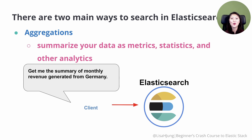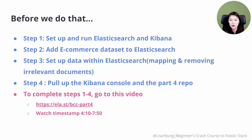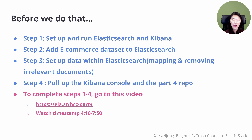The best way to show you how these aggregations work is by running these requests with Elasticsearch in Kibana. To do that, we'll be working with an e-commerce dataset and running aggregation requests on it, which will help us gain insights about our data. We need to complete four steps: first, set up and run Elasticsearch and Kibana; then add the e-commerce dataset to Elasticsearch; afterwards, set up the data; and lastly, pull up the Kibana console in one window and the part four repo in another. I've already covered how to complete these steps in a separate video, so go to the link on the screen and watch from timestamp 4:10 to 7:50.